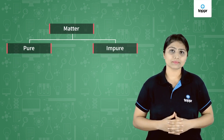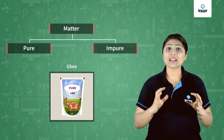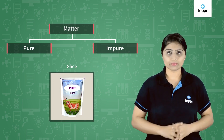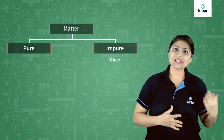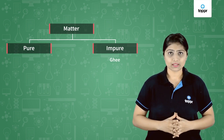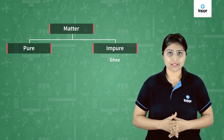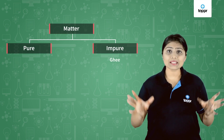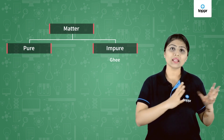Let's take one example: ghee. For us, ghee is pure if it is not adulterated — that means no other substances are mixed inside. But according to scientists, even pure ghee is impure matter. Why? Because ghee is made up of different things: fats, vitamins, cholesterol, and so many things. So according to scientists, ghee is an impure matter. Anything made up of different kinds of particles is called impure matter.